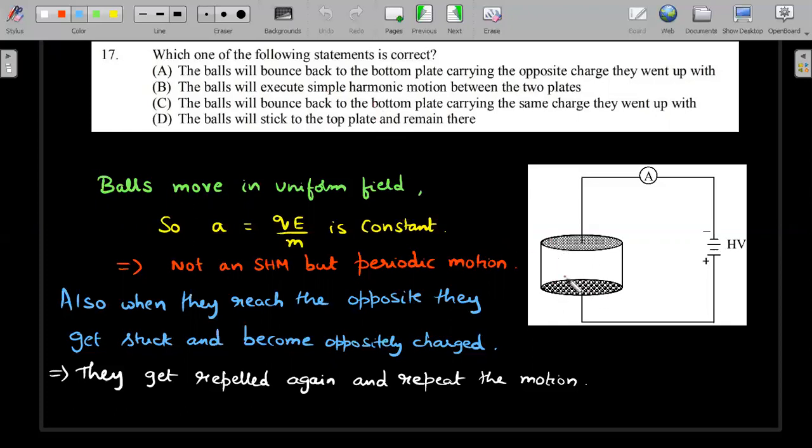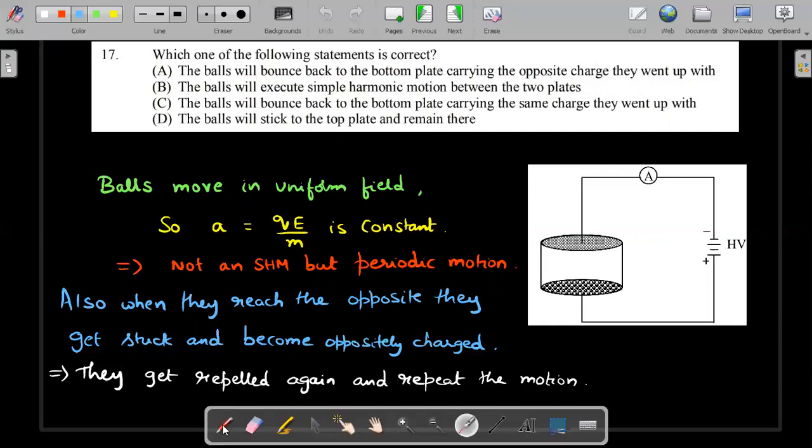Nothing of that sort is happening in this question. So this was just a scary option that you should have eliminated. But the motion is going to be periodic back and forth. And not only that, the positive charged balls that you'll have here acquire the charge and get repelled. They hit the top plate. And when they reach the top plate which is negatively charged, the conduction happens between them and they get stuck and they become oppositely charged. So when they again get repelled from the top, like what happened at the bottom, they start coming down with exactly opposite charge as they went up with and this motion keeps repeating itself. So the balls will bounce back to the bottom plate carrying opposite charge that they went up with would be the appropriate option to mark.